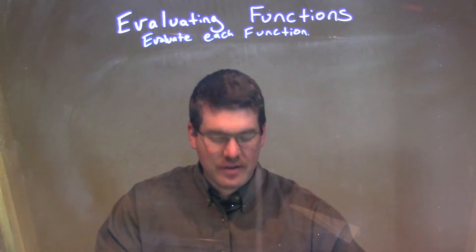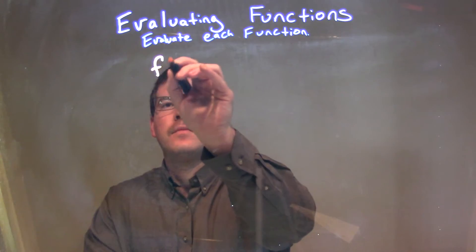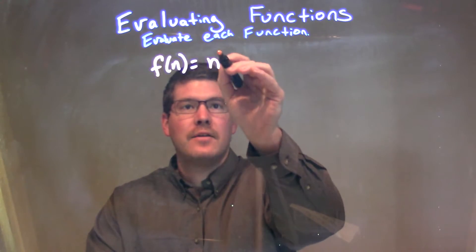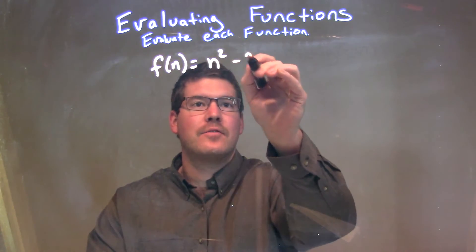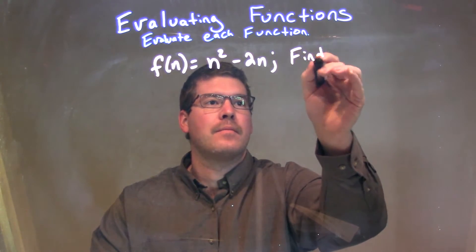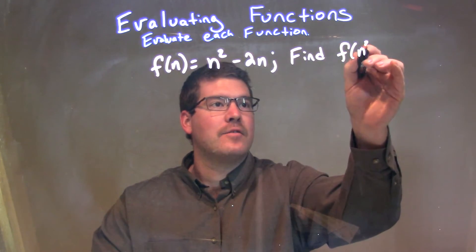So if I was given this function, f of n is equal to n squared minus 2n, and we need to find f of n squared.